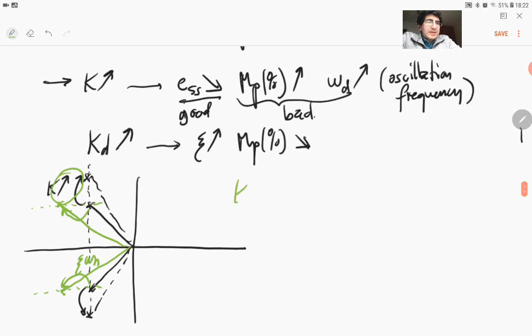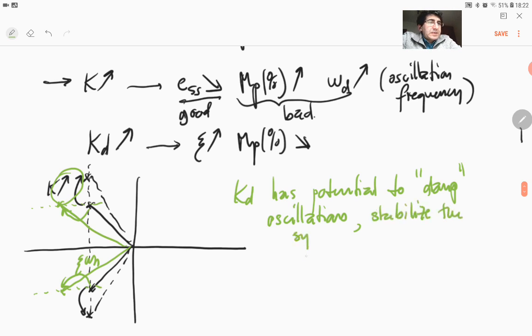So KD has potential to damp oscillations and stabilize the system by limiting the increase of MP percent as well. That's what we have with proportional derivative control.